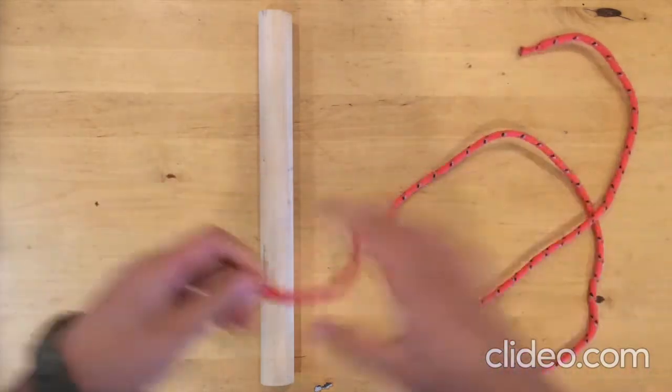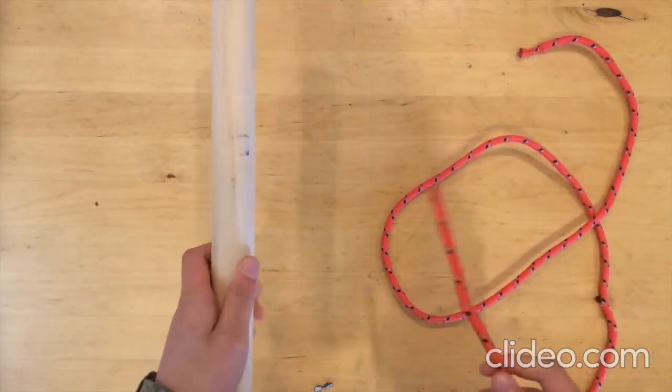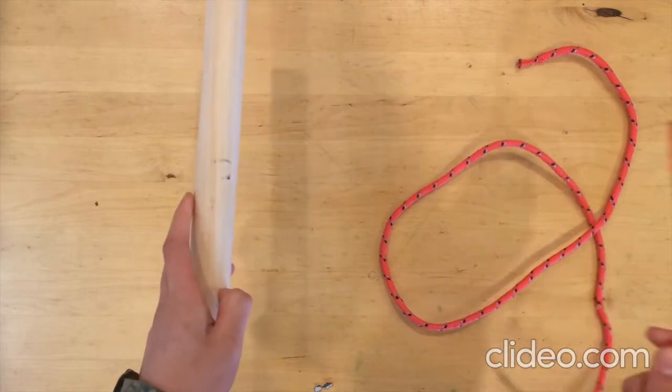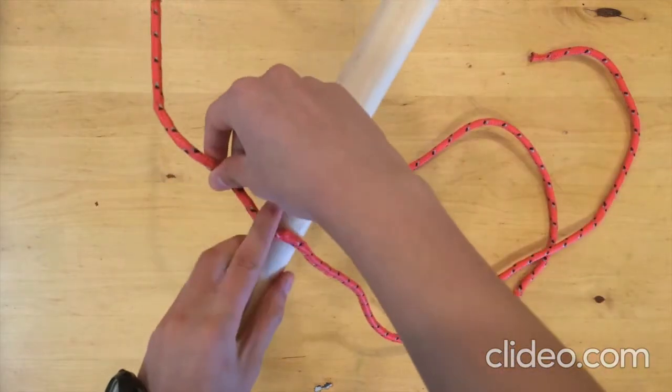All right, so the first thing you're going to do is take this rope and take a pole, or an arm, or a chair leg, and you're going to go around using this rope.